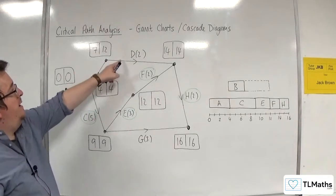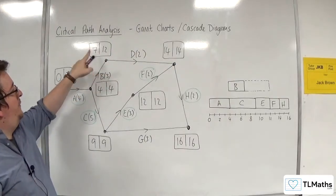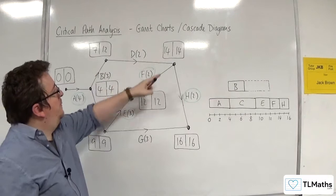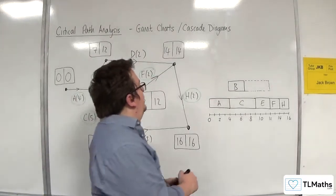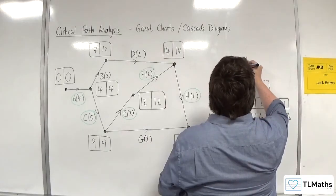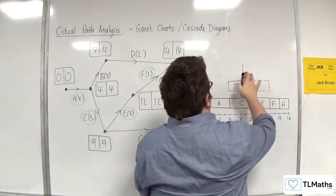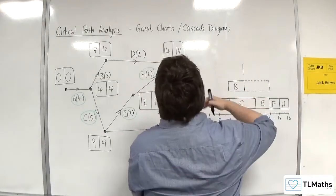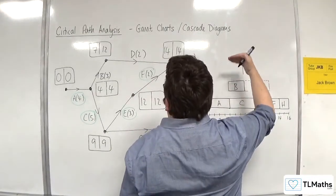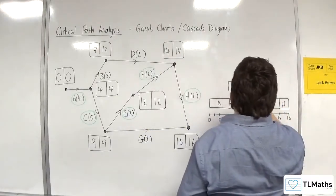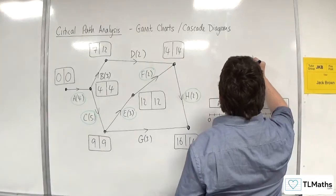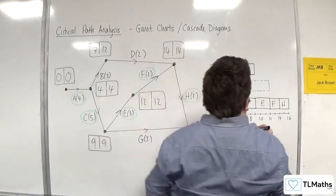Now, D can start at 7 - that's the earliest time it can start - and it can go up to 14. It lasts 2 hours. So we go to 7, and we need to go on to a new bit here, a new line. So leave a gap. For each other activity that's not critical, you need to go on to a new line. So 2 hours. There's D, and it can go up to 14.